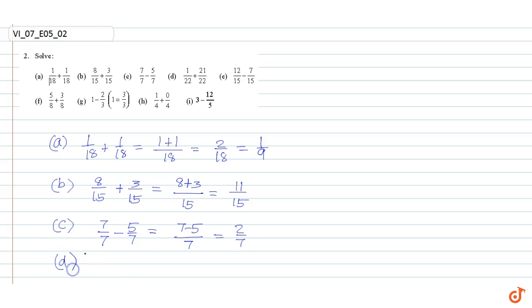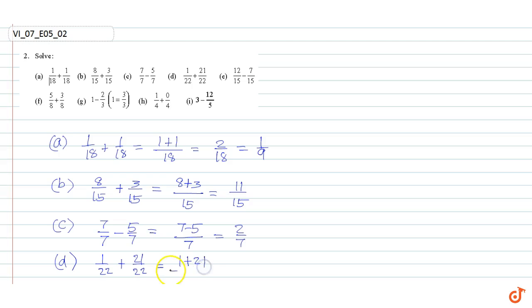Part d: 1/22 plus 21/22. Since the denominators are equal, we can write 1 plus 21 divided by 22, which equals 22/22, which equals 1.